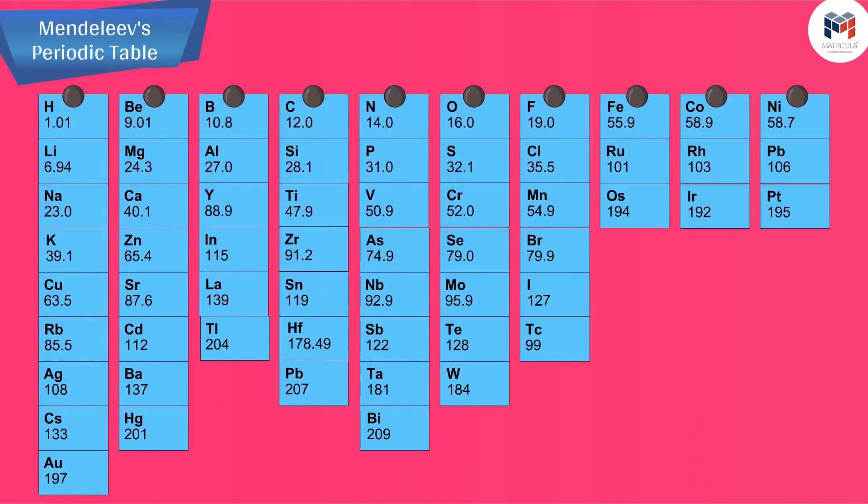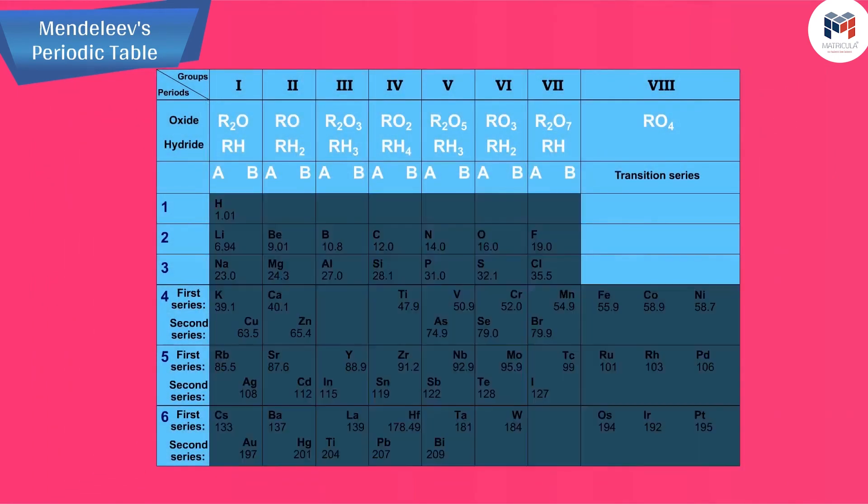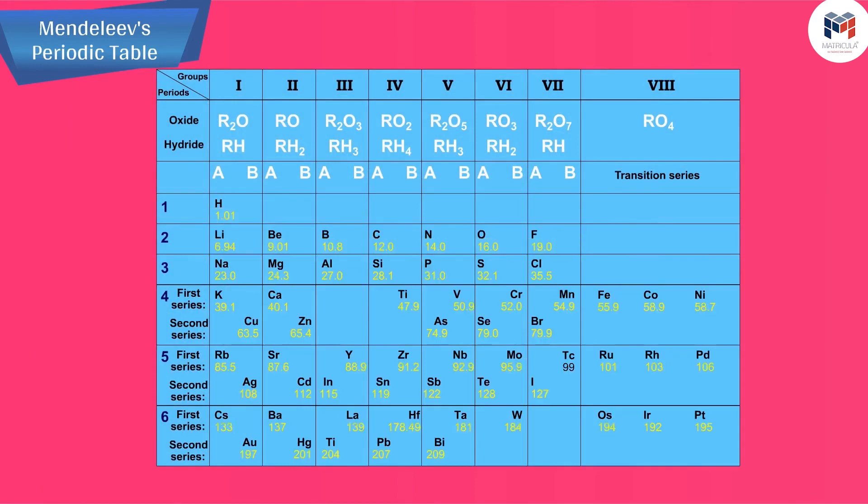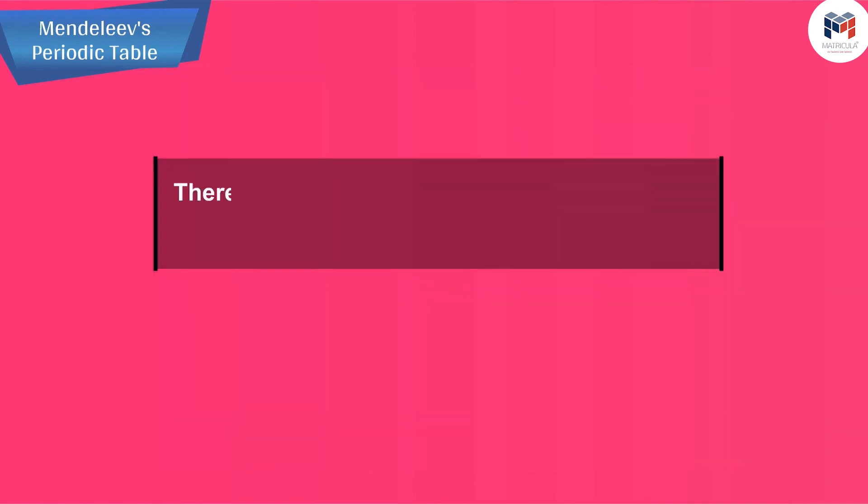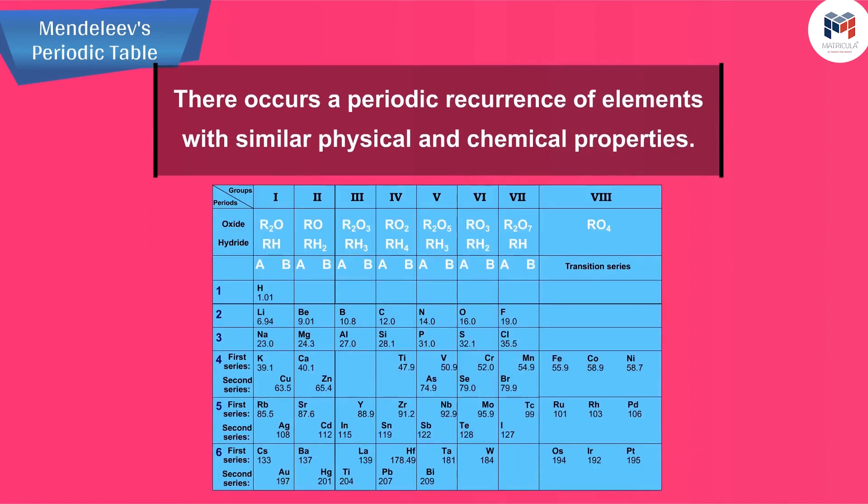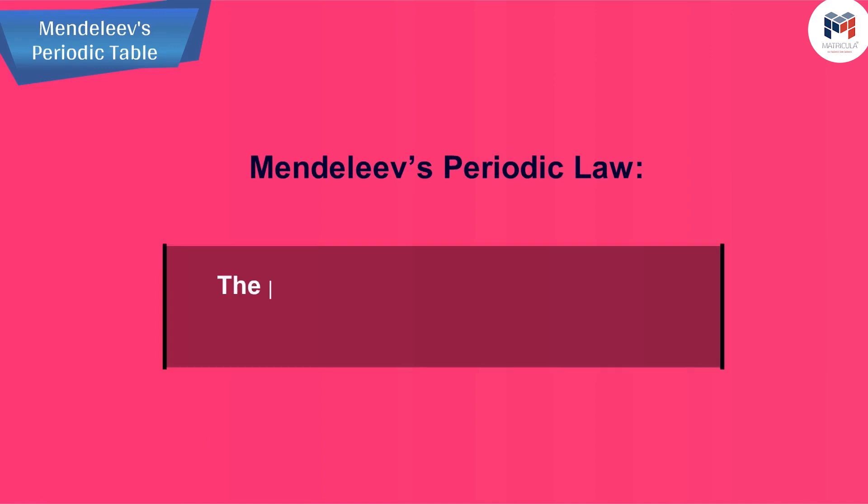He observed that most of the elements got a place in a periodic table and were arranged in the order of their increasing atomic masses. It was also observed that there occurs a periodic recurrence of elements with similar physical and chemical properties. Therefore, he stated his periodic law.